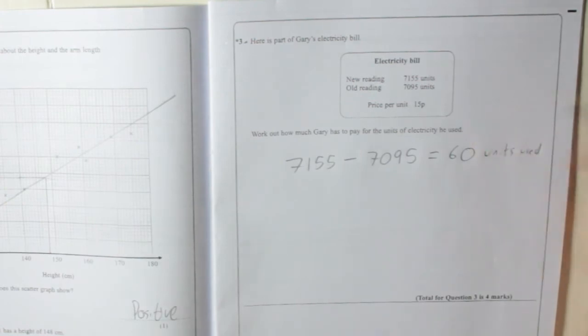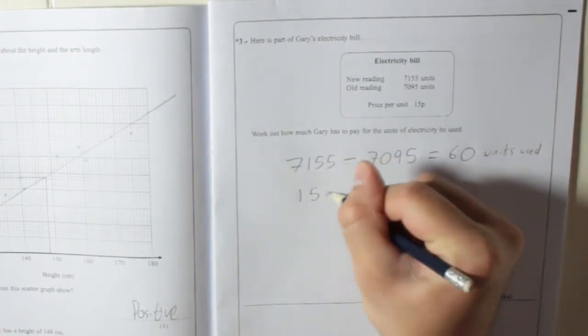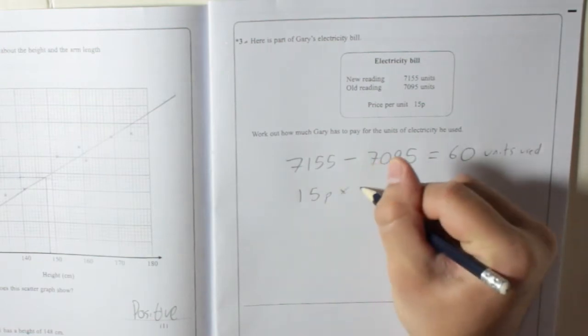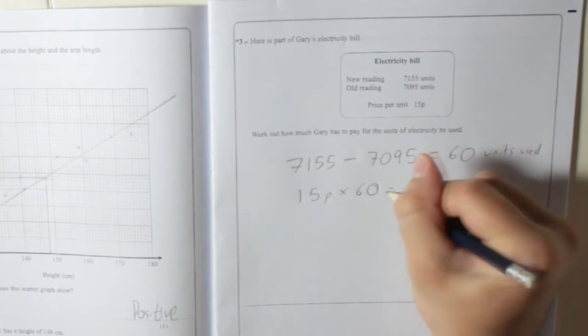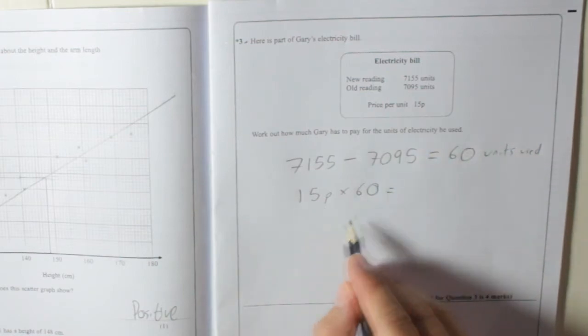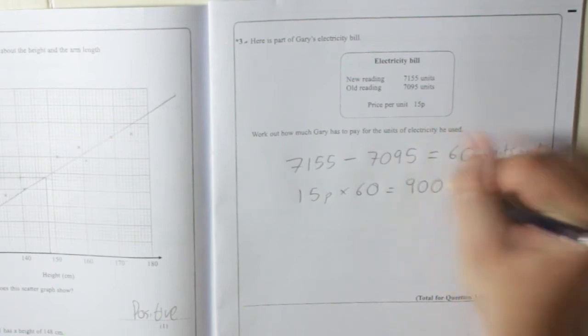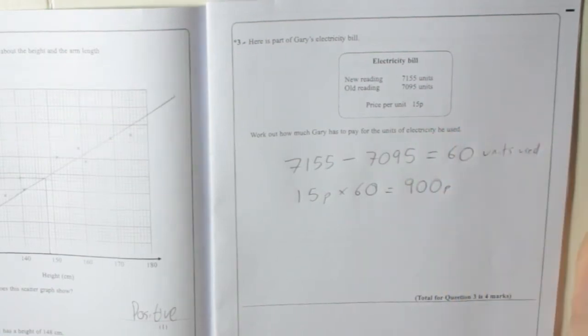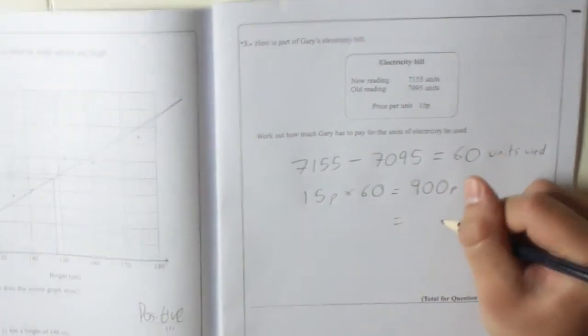So if the price per unit is 15p, you're going to do 15p times by 60. So 10 times 60 is 600, and 5 times 60 is 300. So that's going to be 900p, which is £9.